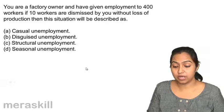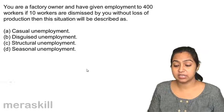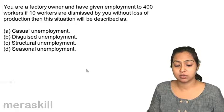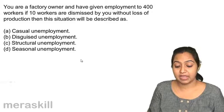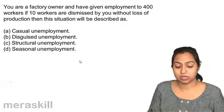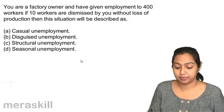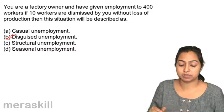For example, if you are a factory owner who has given employment to 400 workers, and 10 workers are dismissed without any loss of production, then those 10 workers were in a state of disguised unemployment.